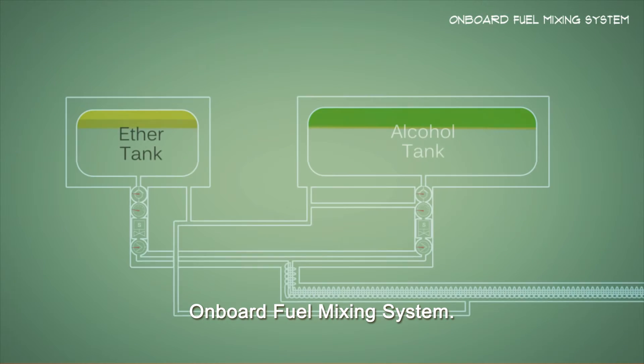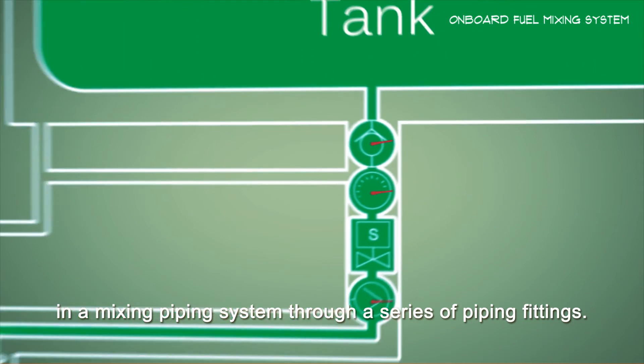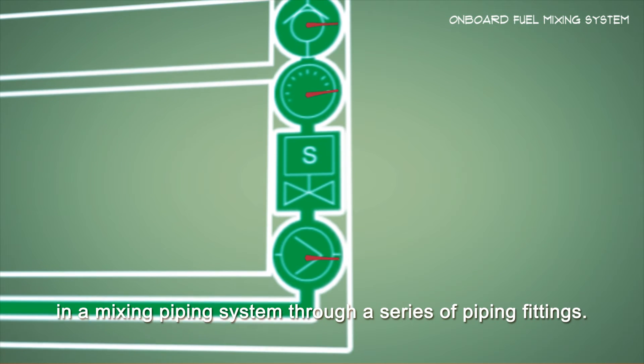Onboard fuel mixing system. Alcohol and ether component of fuel are mixed together in a mixing pipe system through a series of piping fittings.